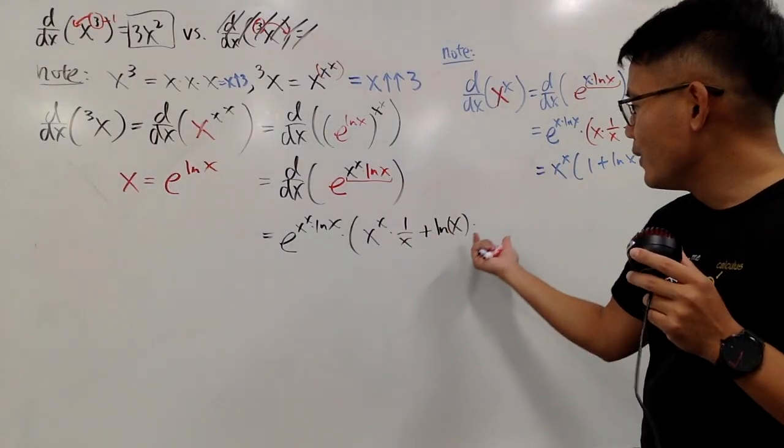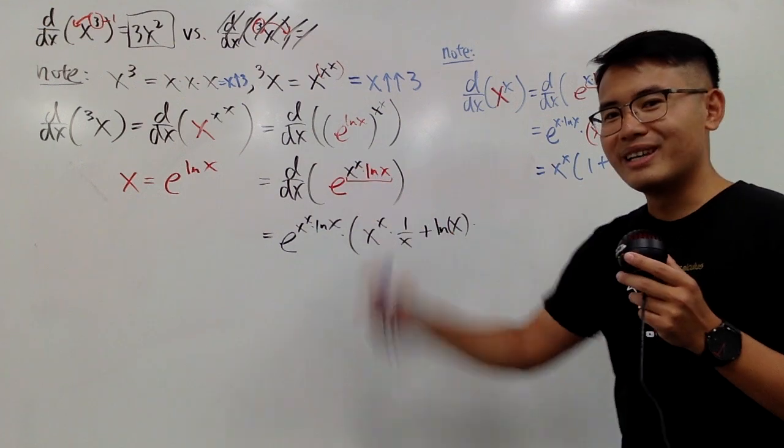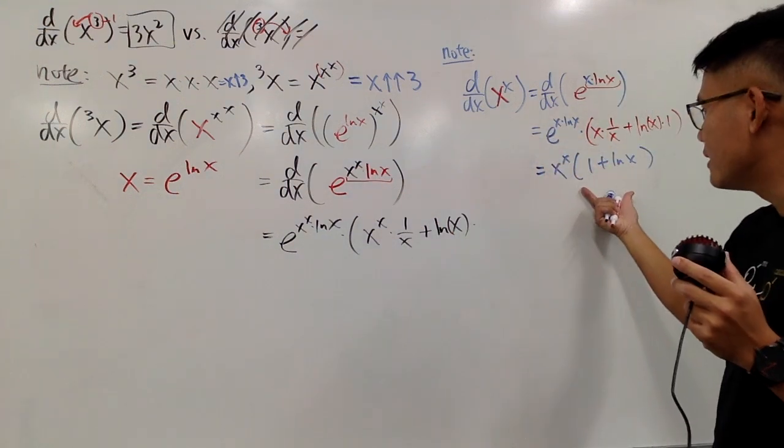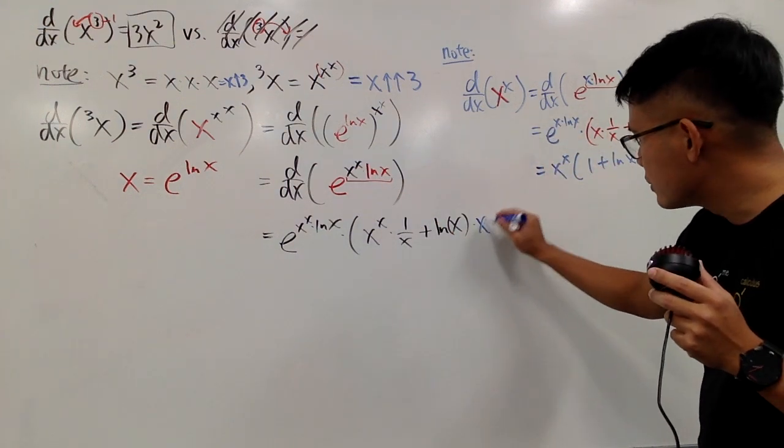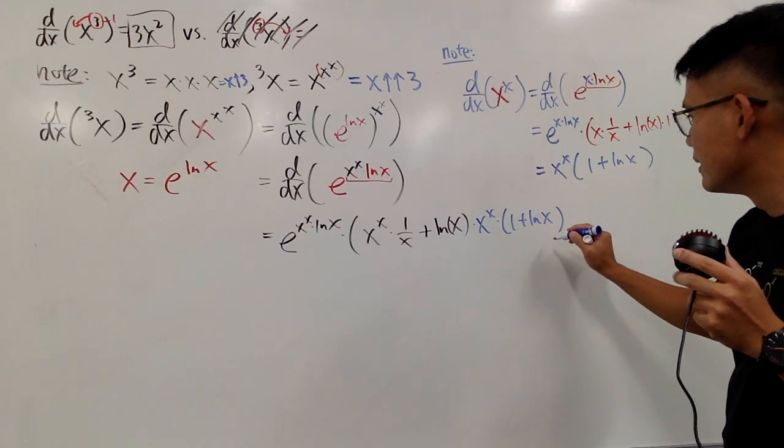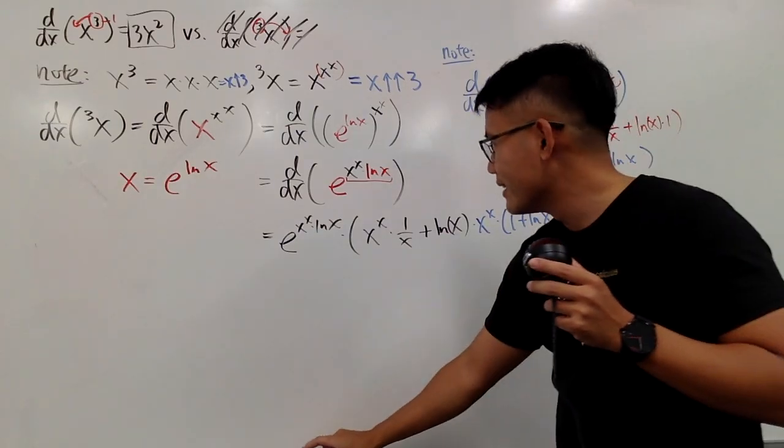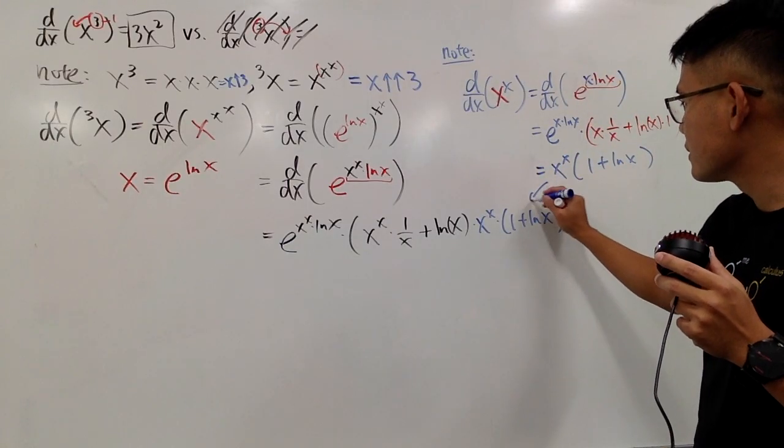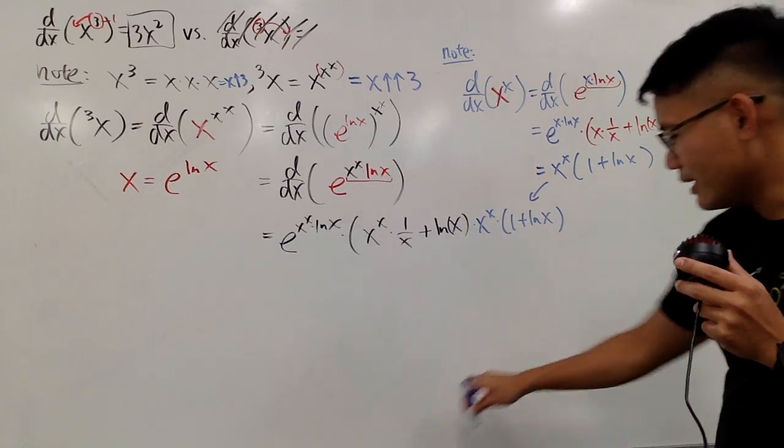So when we need to multiply by the derivative of x to the x, it's pretty much this right here. I will just enter this part right here. x to the x times 1 plus ln x like this. Okay. So this is the derivative of x to the x part. So that's it.